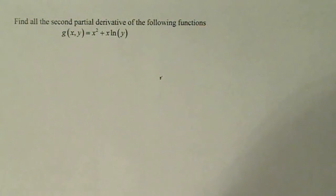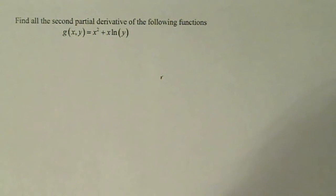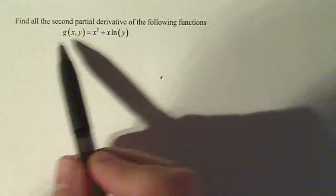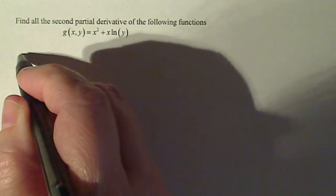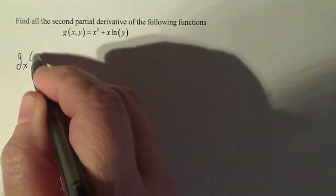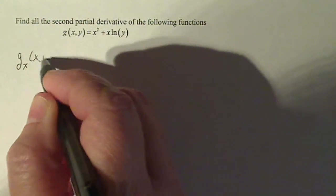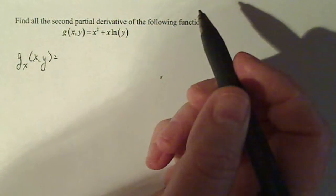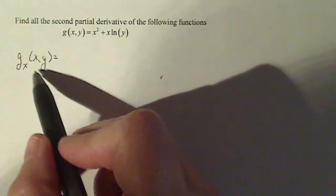I'm going to try to find all the second partial derivatives of the following function. In order to find all the second partial derivatives, I have to start with the first partial derivative. I need to calculate g sub x of xy first, and then g sub y of xy. So let's do g sub x first.